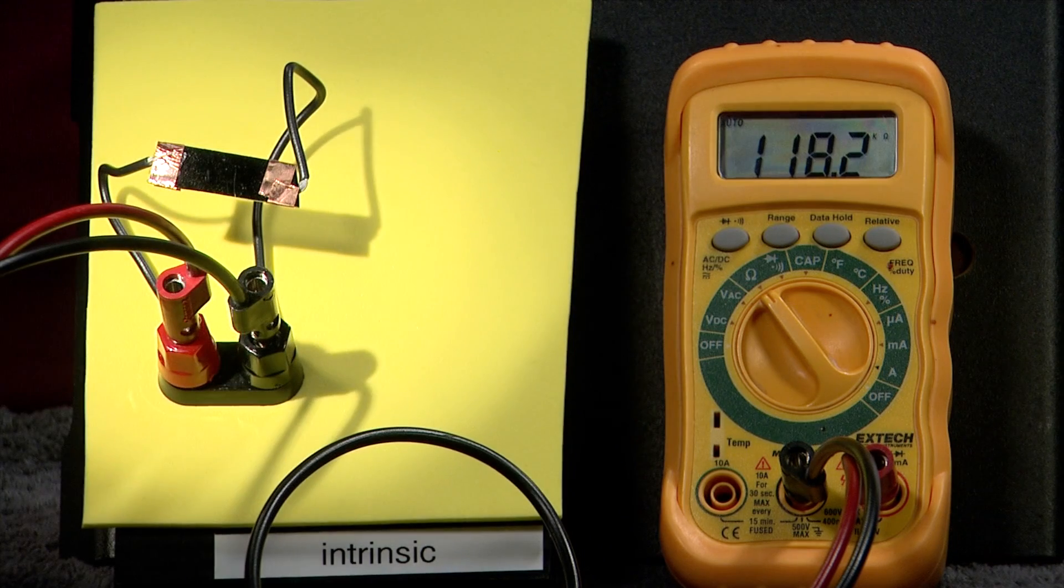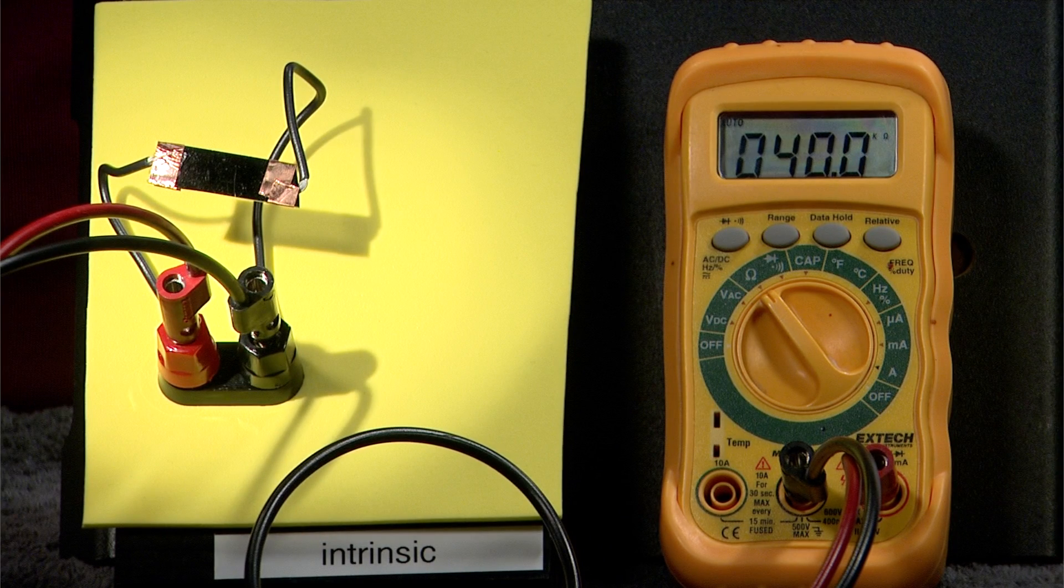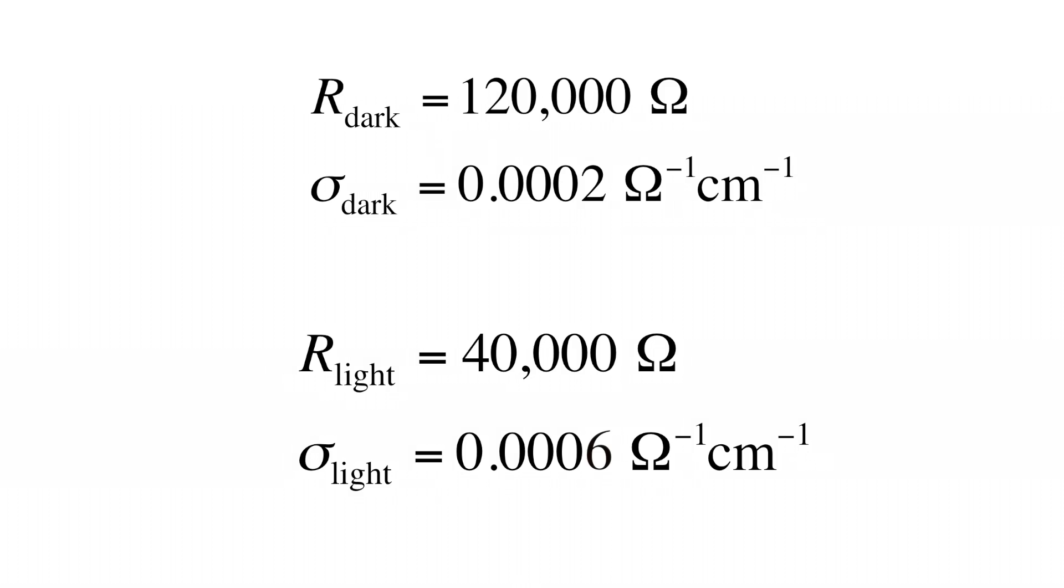Now let's flip on the light. We can see that we measure a slightly lower resistance of around 40,000 ohms. But what is light doing to affect the conductivity so much? Let's zoom into the atomic level and explore why.